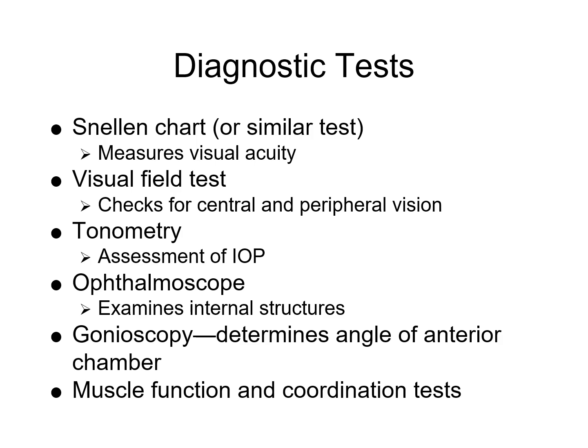The Snellen chart, consisting of lines of progressively smaller letters and numbers, helps measure visual acuity. A visual field test may check central or peripheral vision. Tonometry helps assess intraocular pressure by checking the resistance of the cornea. An ophthalmoscope is used to examine interior structures of the eye, and gonioscopy measures the angle of the anterior chamber. Muscle function and coordination can also be tested.